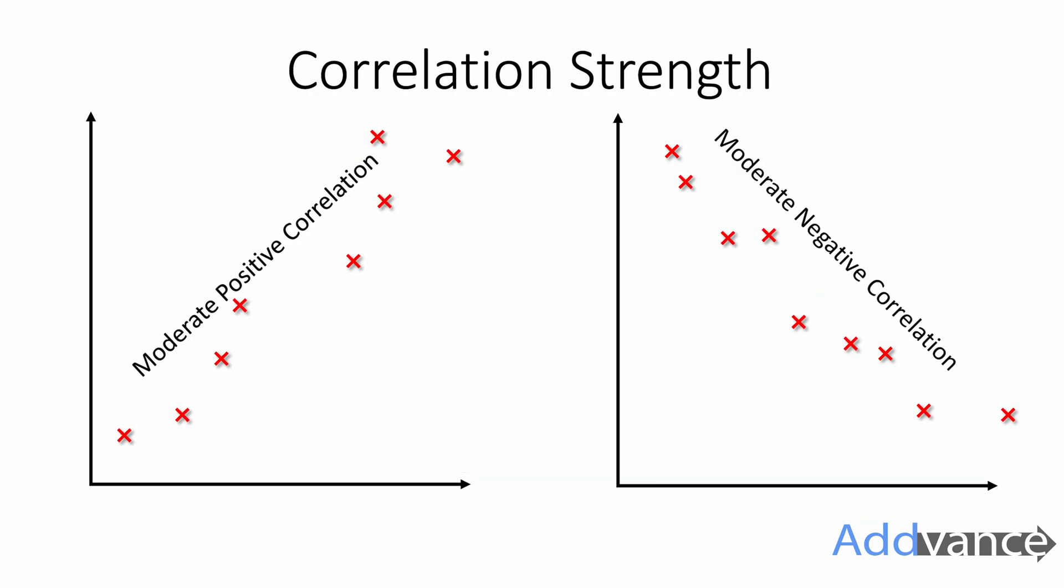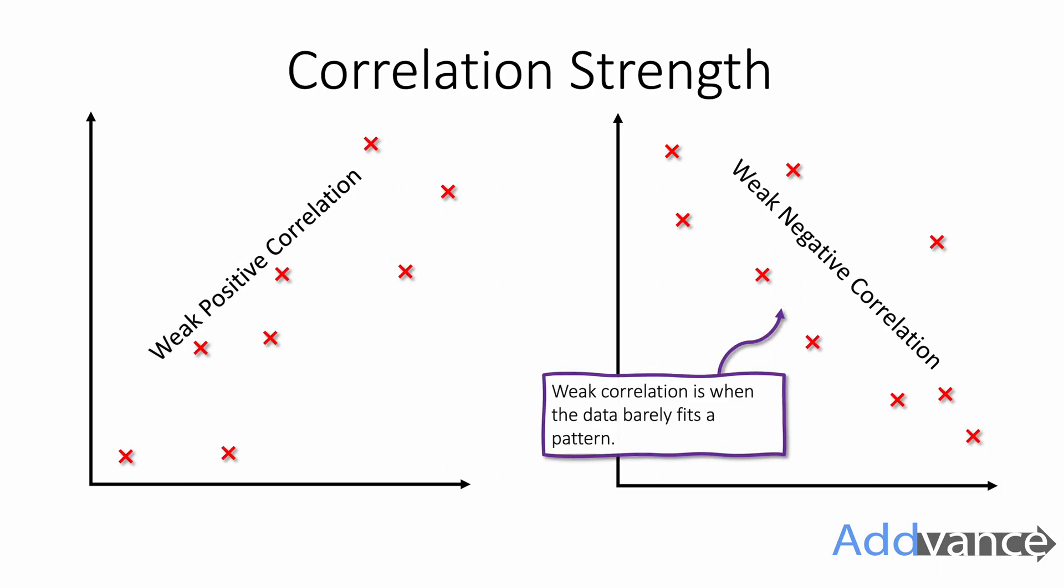Moderate correlation is where it's still following a pattern quite well, but the points are a bit further spread apart. And then weak correlation is where the points are really spread apart, but it does still kind of fit a pattern. We would call it a weak positive correlation or weak negative correlation.